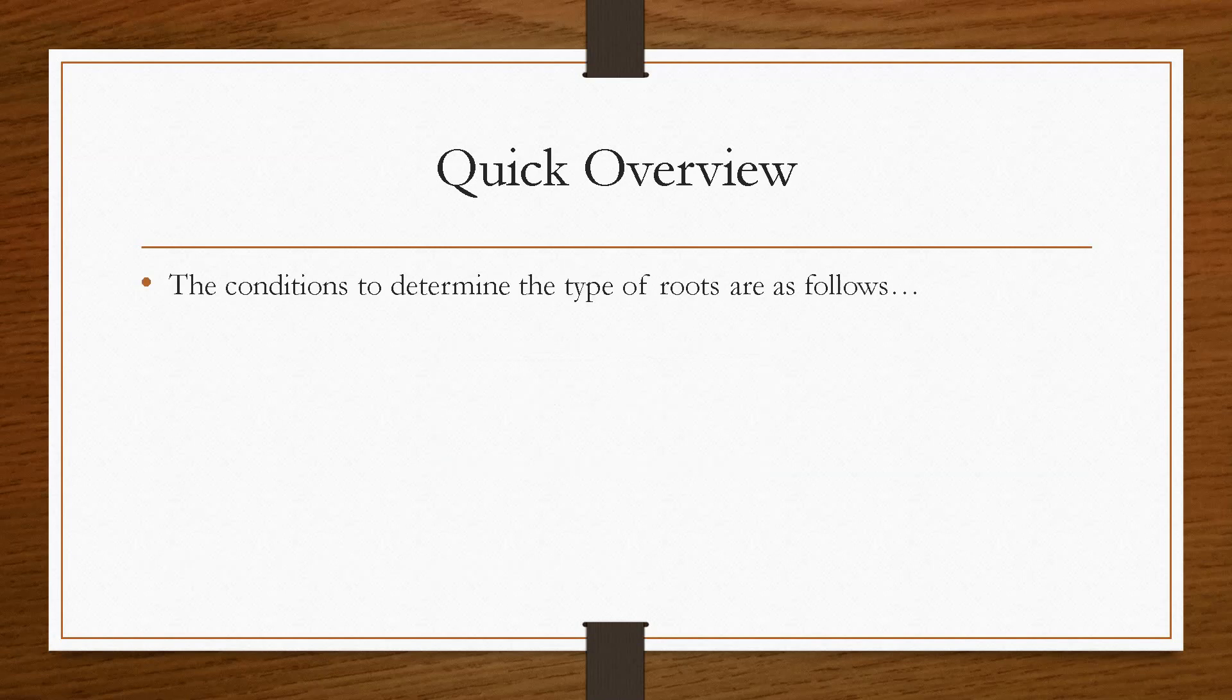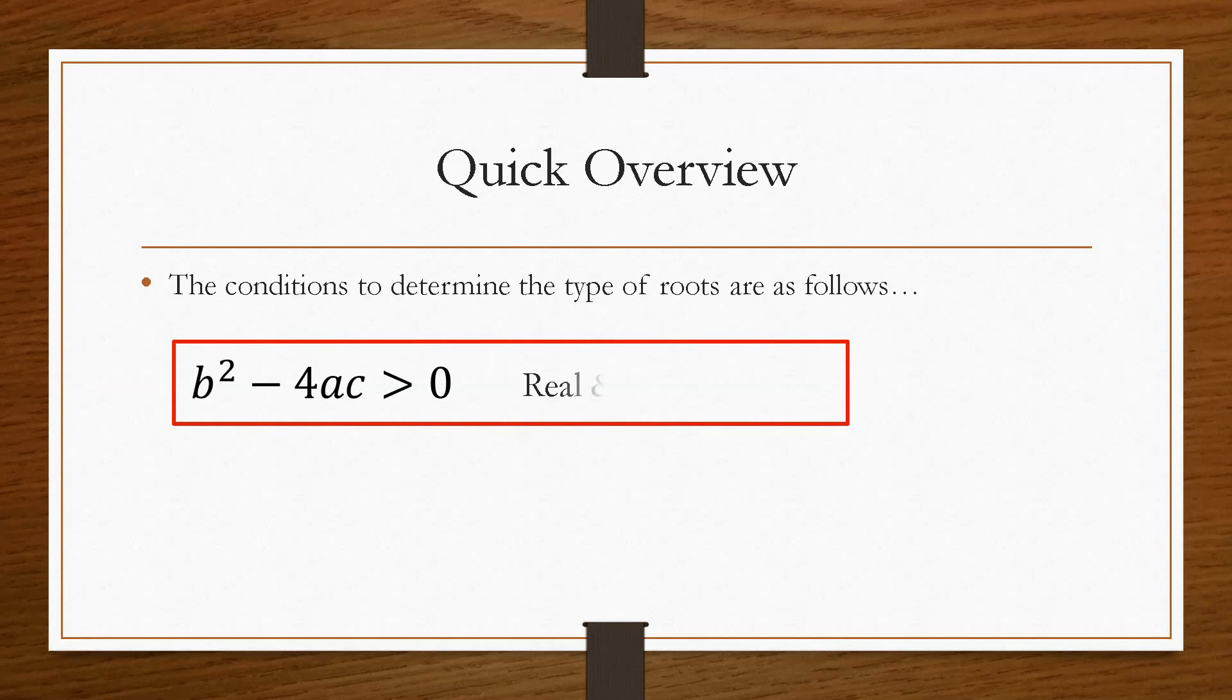So the conditions that need to be met, which will tell us what type of roots we have, is if b squared minus 4ac is greater than zero, we have real and distinct.